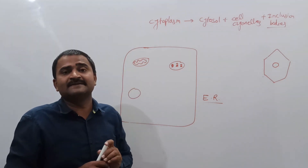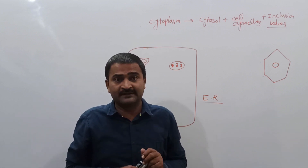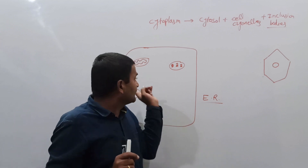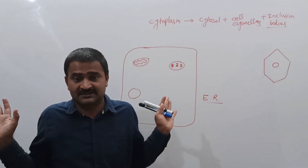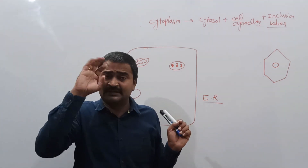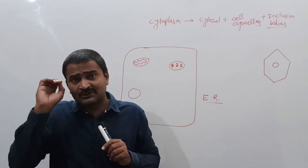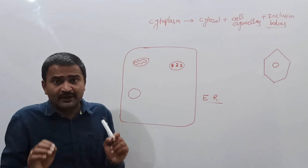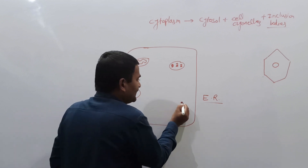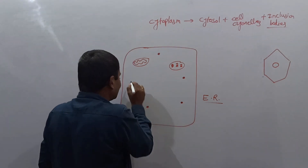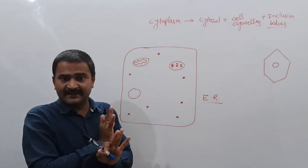The third component of cytoplasm is inclusion bodies, also called ergastic bodies. Inclusion bodies are non-living structures present in the cell cytoplasm — they are not metabolically active. Inclusion bodies are nothing but storage granules present in the cytoplasm, used to store materials.